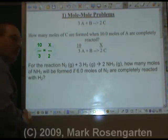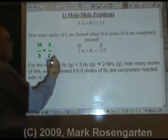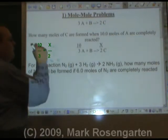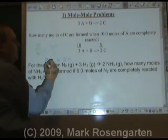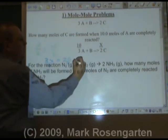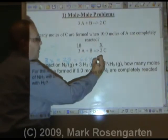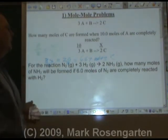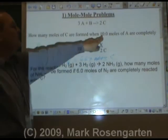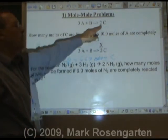So you just solve this algebra problem. Three X equals ten times two is twenty. So now we divide both sides by three. Twenty divided by three equals 6.67 moles of C. Why three sig figs? Because this has three sig figs. These aren't measurements, so sig figs don't apply to them.